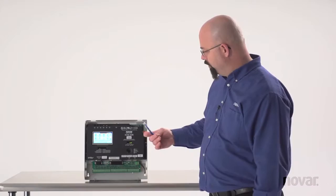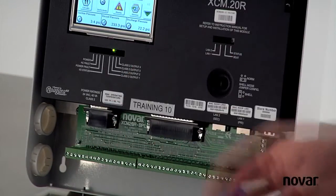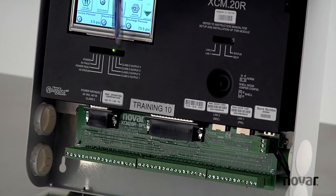With the cover removed, right underneath my LCD, I've got a few LEDs here. We want to look at the right-hand side, and it says Class 2 outputs 1, 2, 3, and 4.